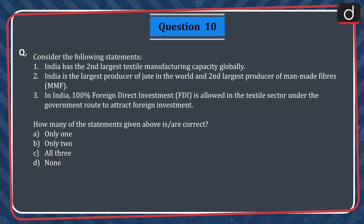Question 10. Consider the following statements. 1. India has the second largest textile manufacturing capacity globally. 2. India is the largest producer of jute in the world and the second largest producer of man-made fibres (MMF). 3. In India, 100% foreign direct investment (FDI) is allowed in the textile sector under the government route to attract foreign investments. How many of these statements are correct? A. Only one. B. Only two. C. All three. D. None.